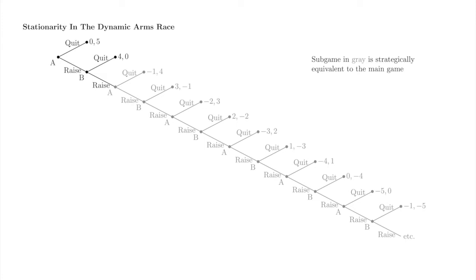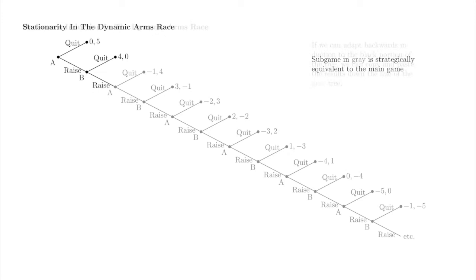When we refer to stationarity, we mean that the game contains a copy of itself as a subgame. Why is stationarity useful? It means that we just need to figure out what is going on in subgame perfect Nash equilibrium in the first two moves of the game, in the portion of the tree shown in black. Then stationarity says that the subgame perfect Nash equilibrium consists of: A doing at all of A's moves whatever A did at A's first move, and B doing at all of B's moves whatever B did at B's first move. So we only need to deal with two moves of this infinite depth game to find subgame perfect Nash equilibria.